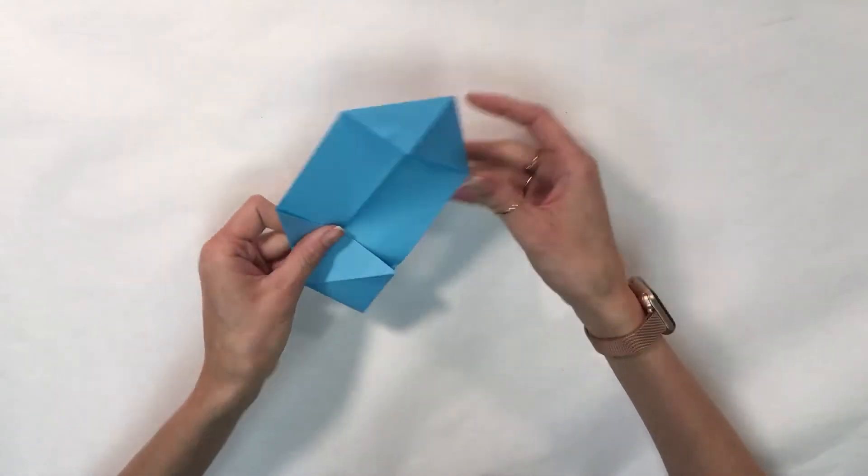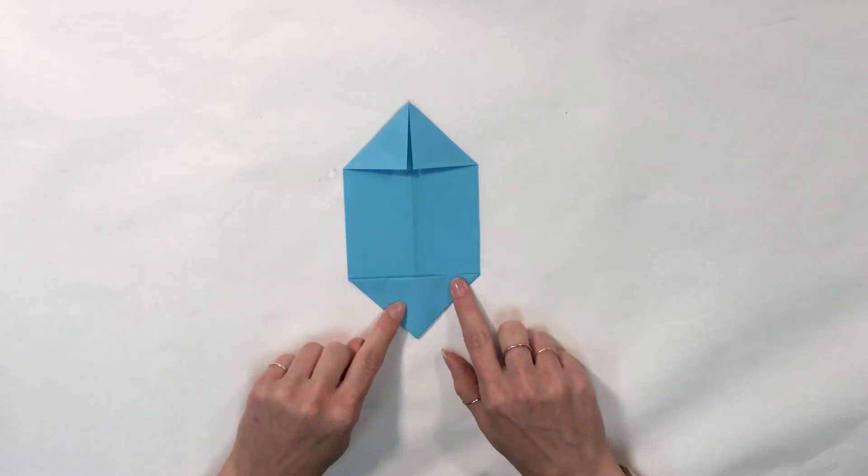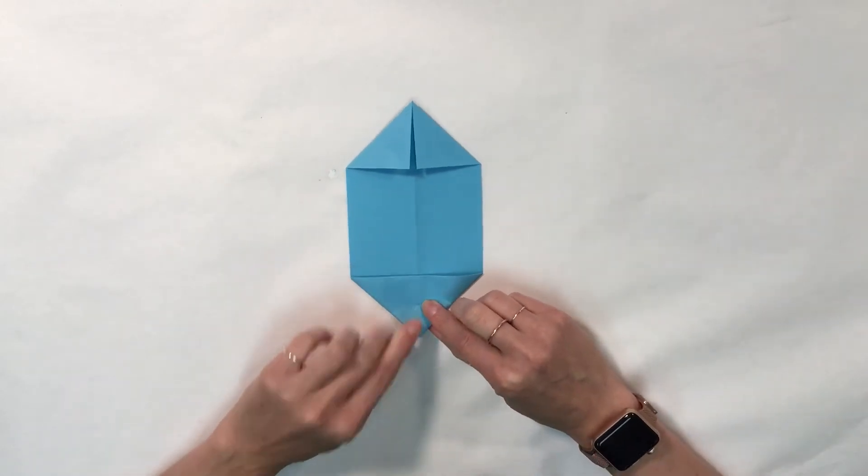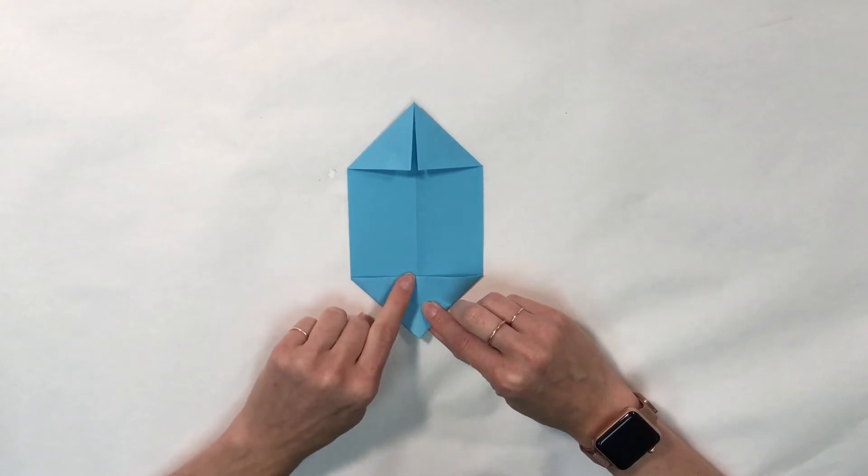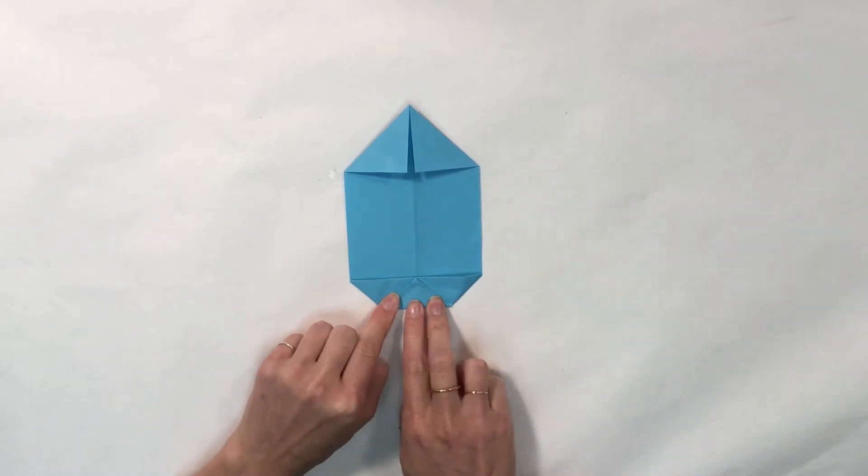I'm going to open my paper back up and fold the top edge to the top point of my triangle, to the top of the folded collapse triangle.